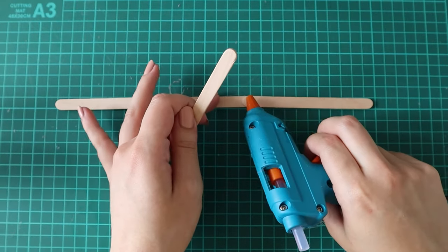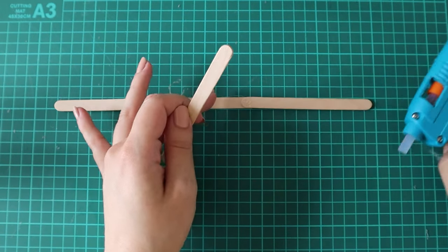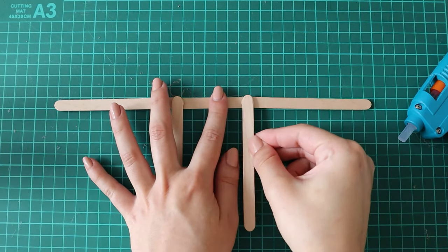Once I've done both sides, I'm gluing on two more sticks onto the end of the sticks that I've just cut down, and I'm gluing these perpendicular. This is again where I could have used the set square.